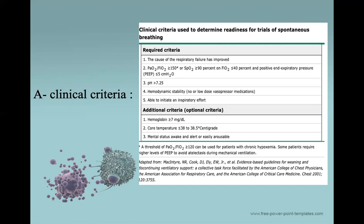Number two, the hypoxic index is more than 150, or the patient's oxygen saturation is more than 90% on FiO2 less than or equal to 40% with PEEP less than or equal to 5. The ABG shows pH more than 7.25. Hemodynamic stability, meaning the patient is on no or low doses of vasopressor medication. Lastly, the patient is able to initiate an inspiratory effort by themselves.